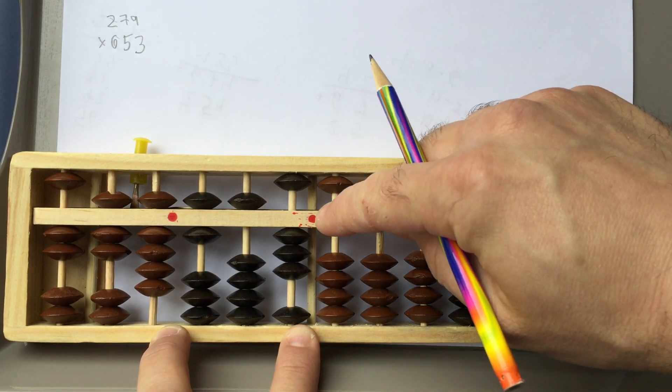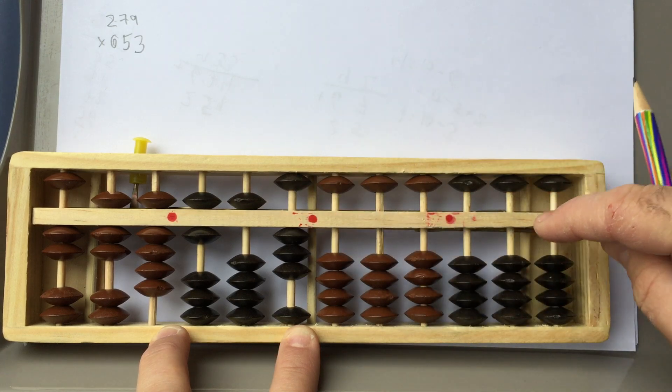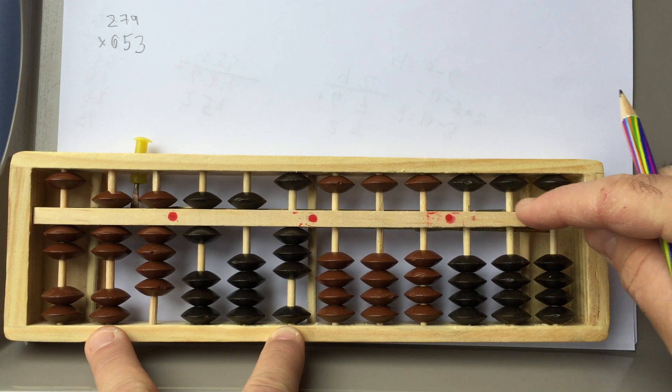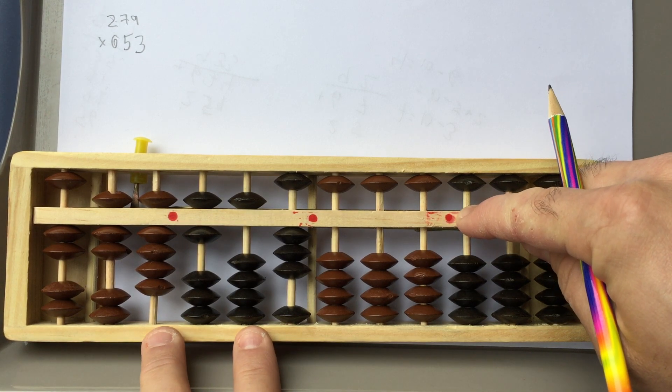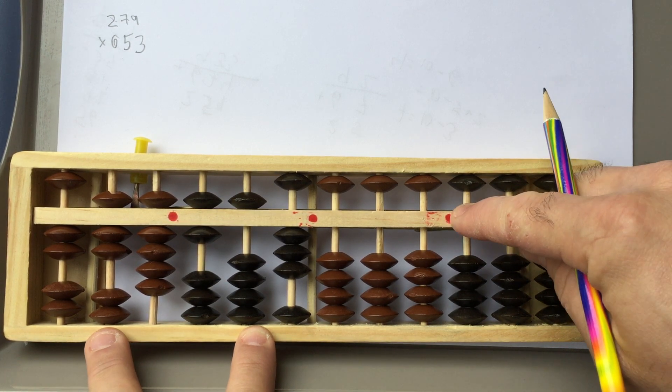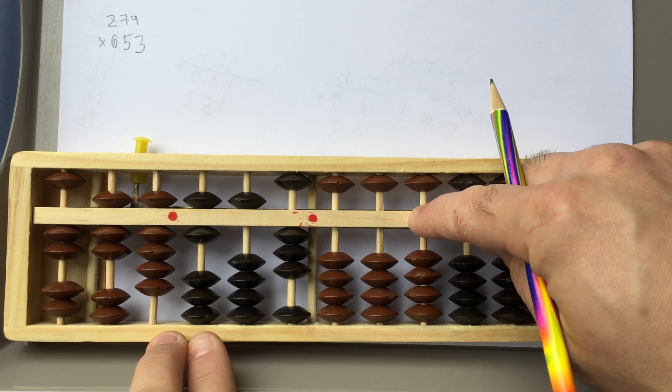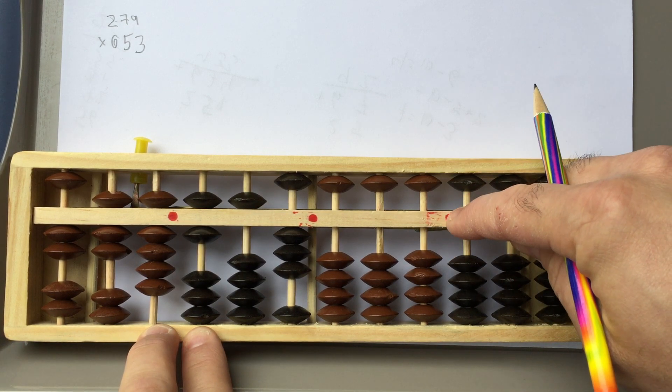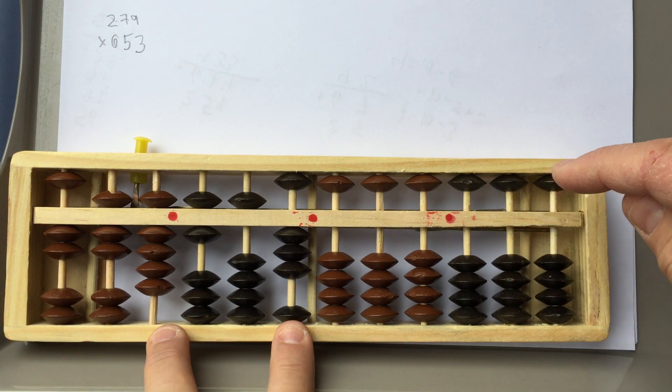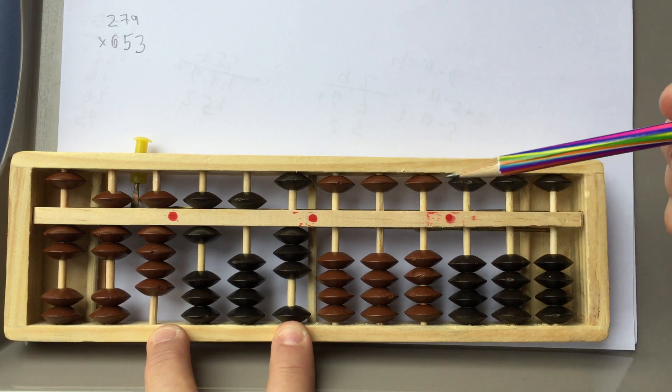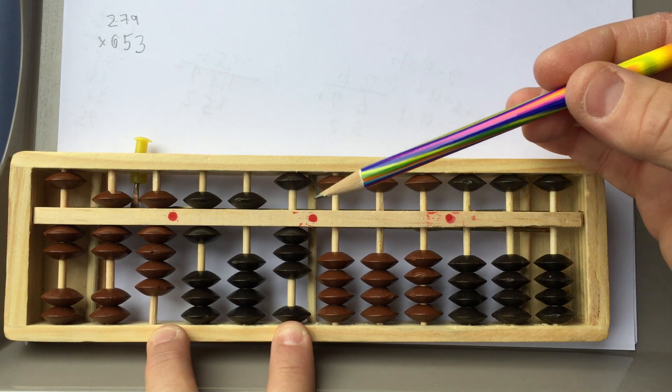So the first value will end up starting here. The second one, when you multiply these two, will end up here. The third one will end up here. Then when you move in, you'll go here, here, here. And then when you do the final ones, you'll go, you'll add it here, here, and here. Okay, so let's go ahead, just as an example, and see if we can manage to get it properly calculated.